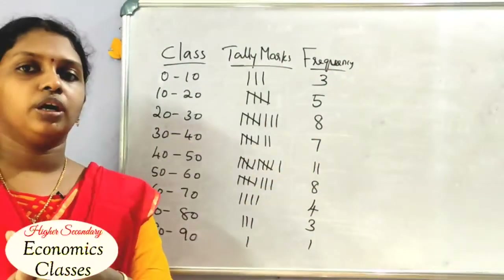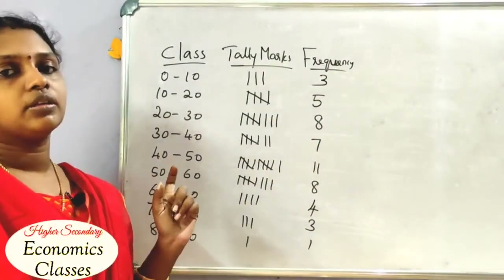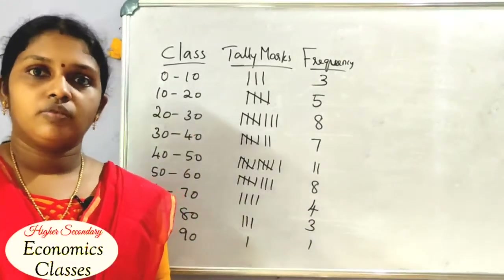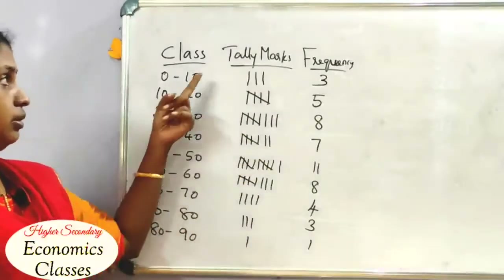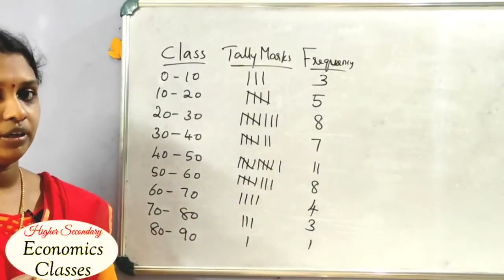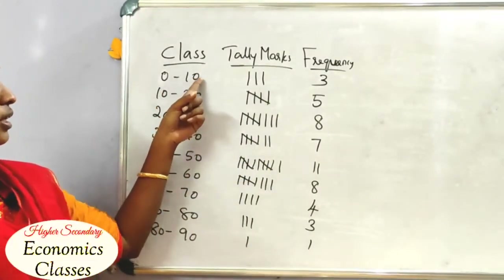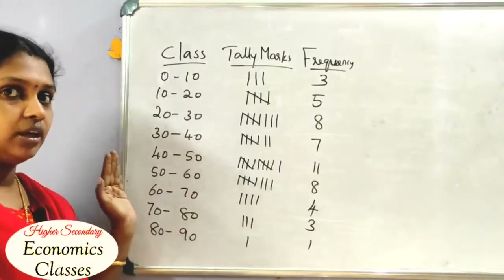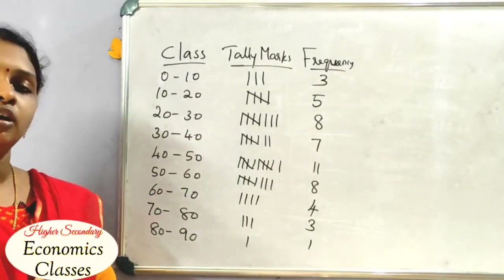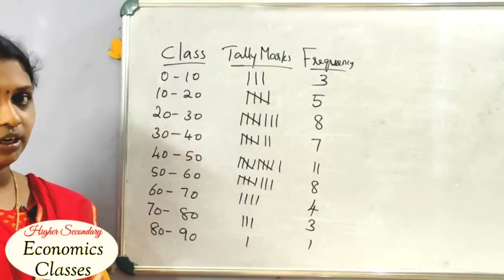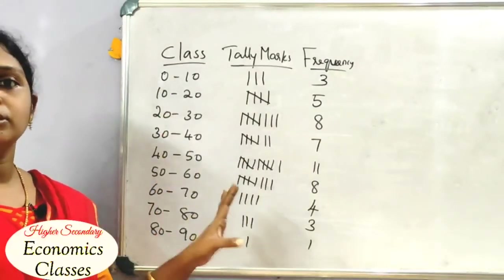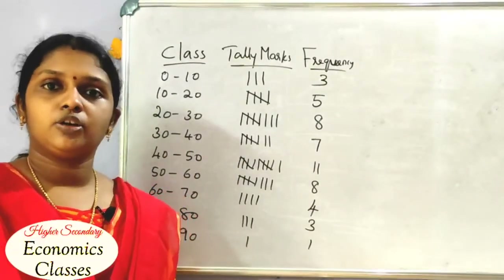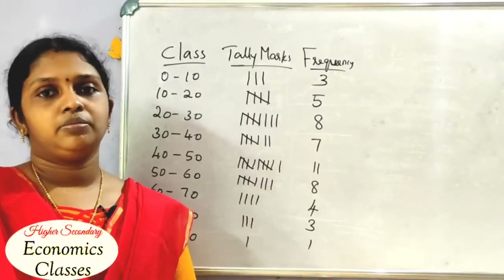Frequency Distribution is very easy — you just need to place each mark in its correct class. Now let's talk about statistics in the economics paper — Indian economy. Okay, bye!